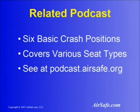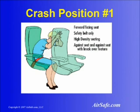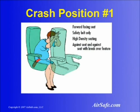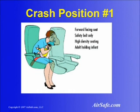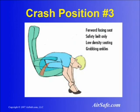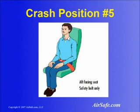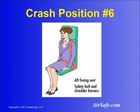Speaking of crash positions, if you go to podcast.airsafe.org, where there's a list of all the previous podcasts, you'll see that one of them covered the six basic crash positions you can take. The six positions depend on the kind of seats you're in — for example, one position for coach seating where you don't have room to bend over and put your head between your legs, as well as the position you should take if you're in a seat in front of a bulkhead or in a seat with shoulder harnesses and lap belts, which is the kind of seat typically seen by a crew member, not a passenger.